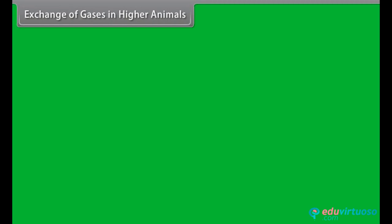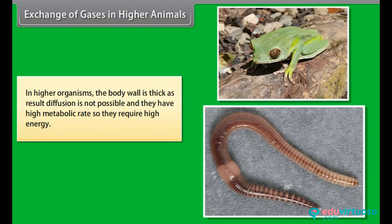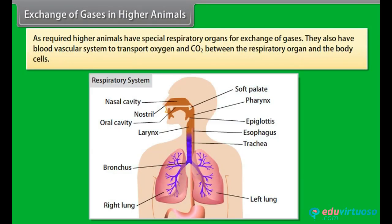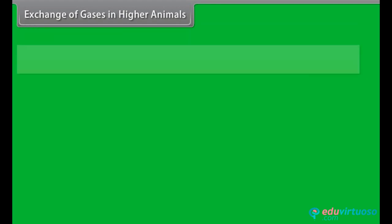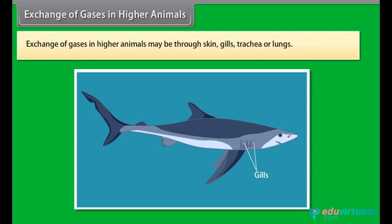Exchange of gases in higher animals: In higher organisms the body wall is thick, so diffusion is not possible, and they have a high metabolic rate requiring high energy. Higher animals therefore have special respiratory organs for gas exchange, and also a blood vascular system to transport oxygen and CO2 between the respiratory organ and body cells. Gas exchange in higher animals may occur through skin, gills, trachea or lungs.